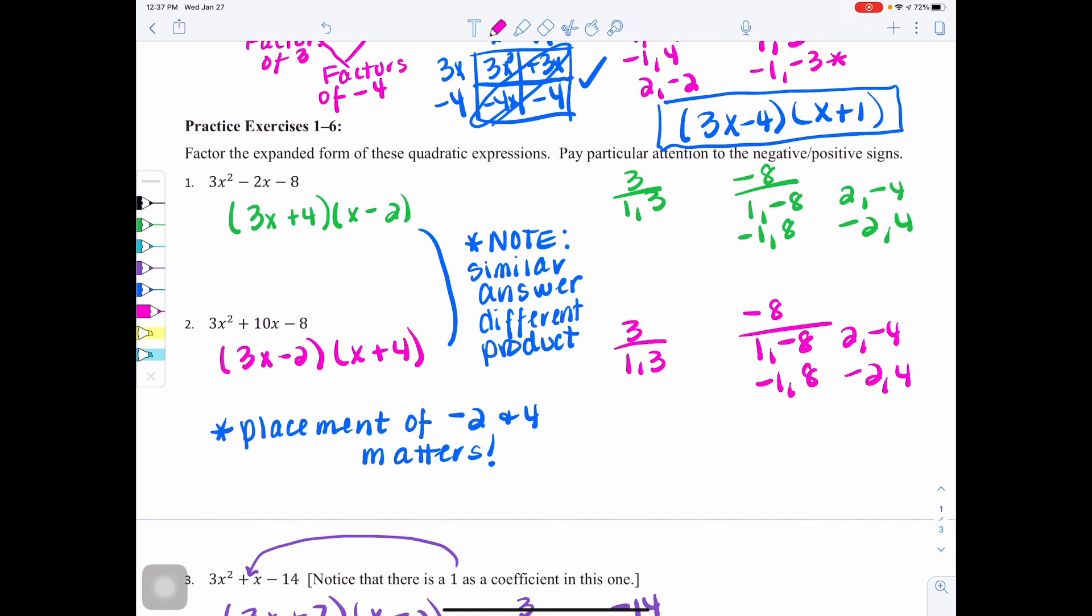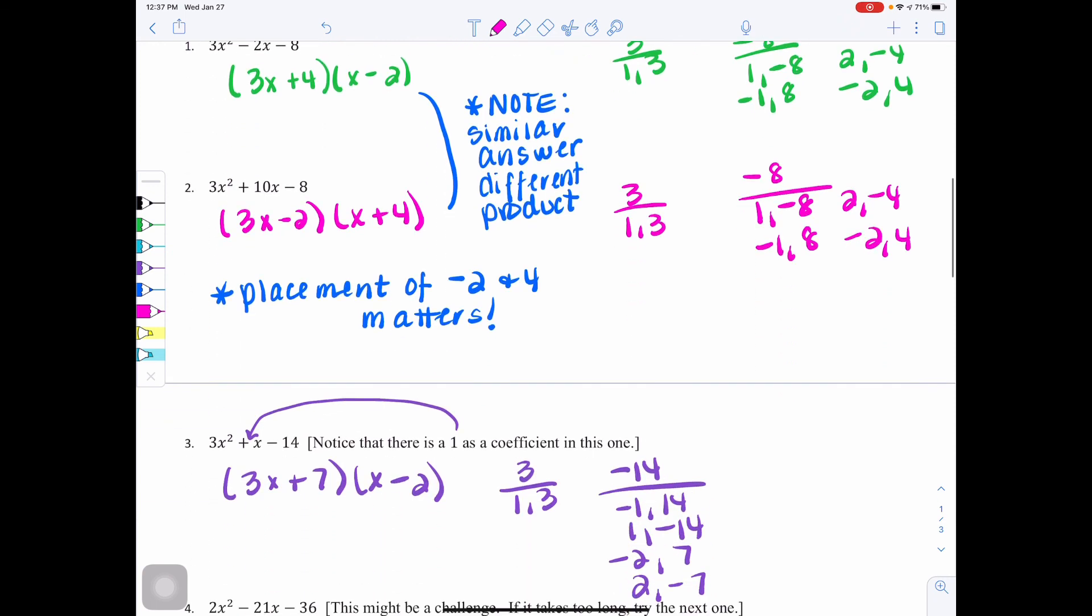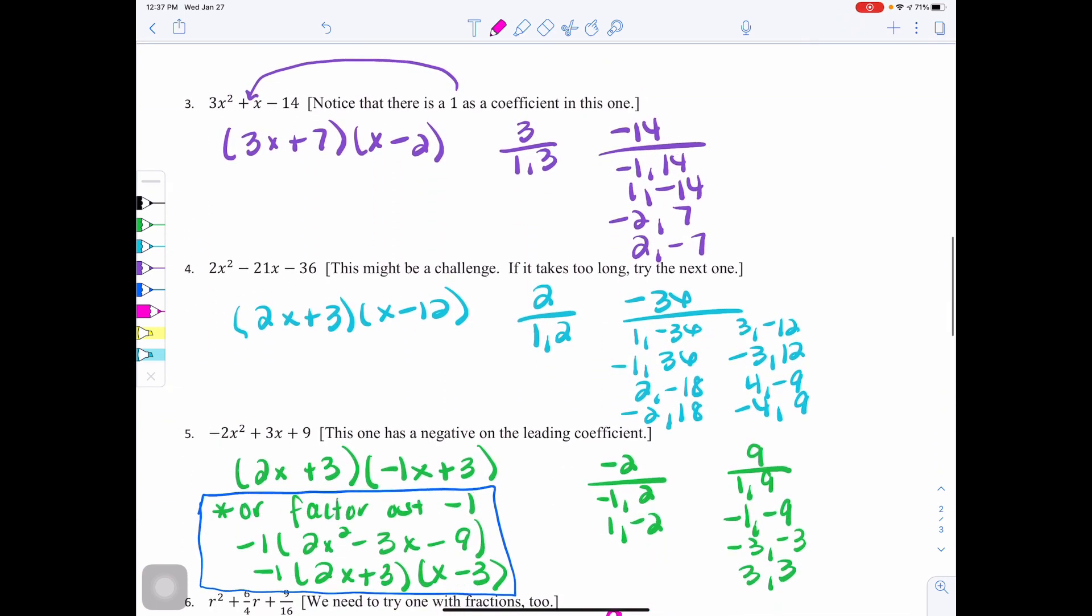Sometimes you might have the right pair, but you have to switch their spots. Because the placement is now going to be affected by whether it gets multiplied by a 3 or a 1 because we have a coefficient in front of the x squared that's not a 1. When it's a 1, we don't have to worry about that extra factor.